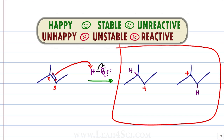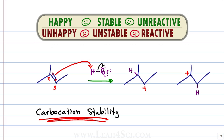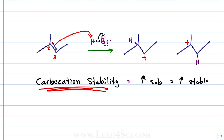This is the key — this is what helps you determine the direction for Markovnikov's rule: carbocation stability. As covered in the carbocation stability tutorial, the more substituted the carbocation, the more stable it will be. A tertiary carbocation is much more stable than a secondary carbocation, which is much more stable than a primary. For this intermediate, we're choosing between a secondary carbocation and a tertiary carbocation.